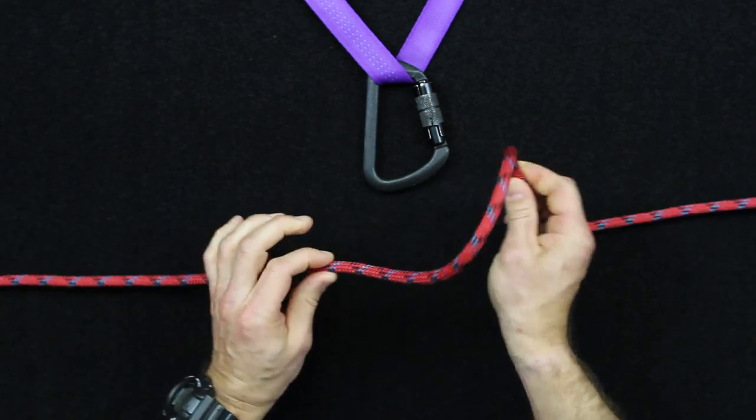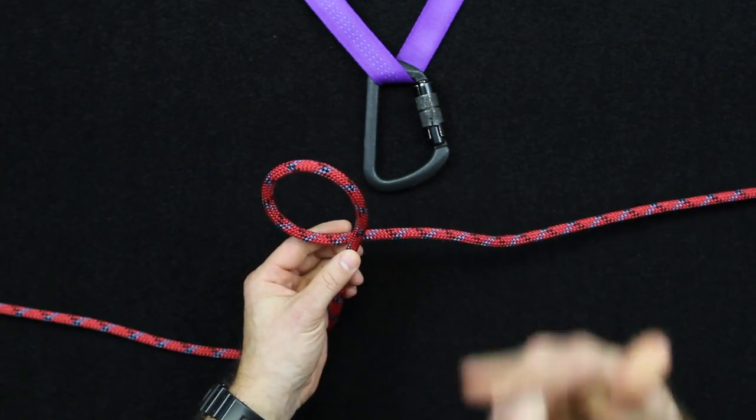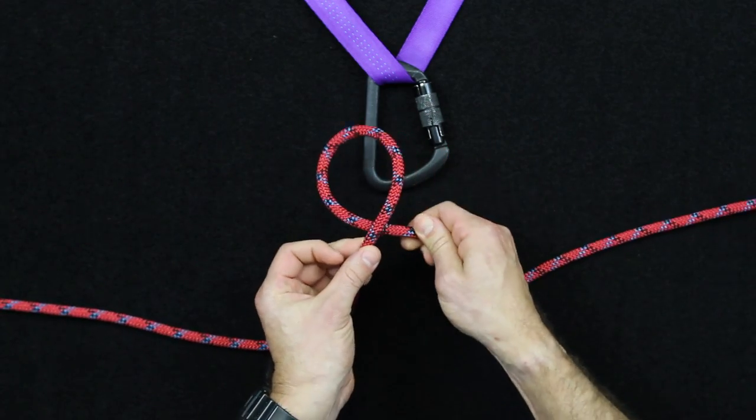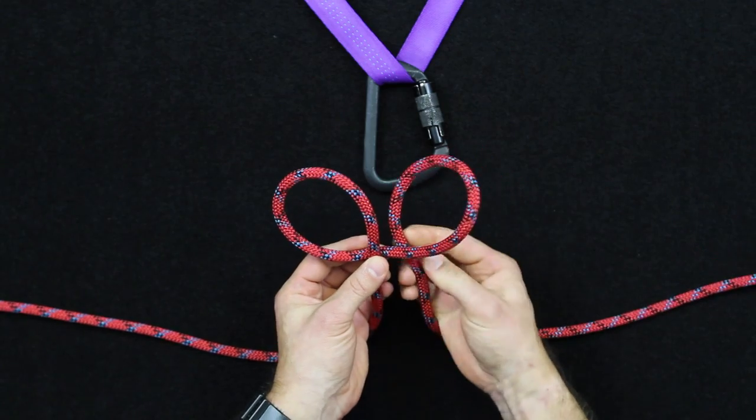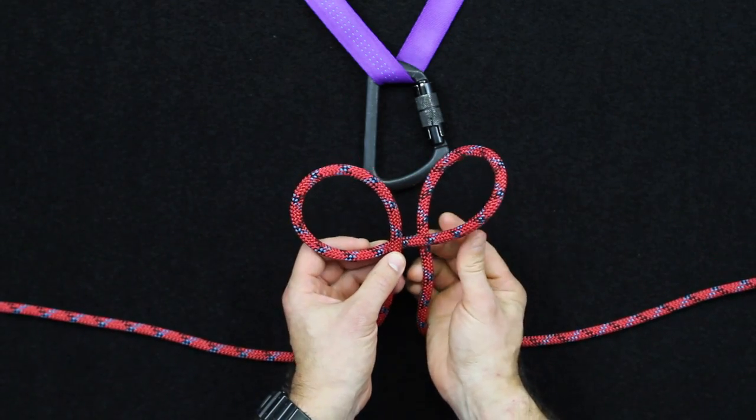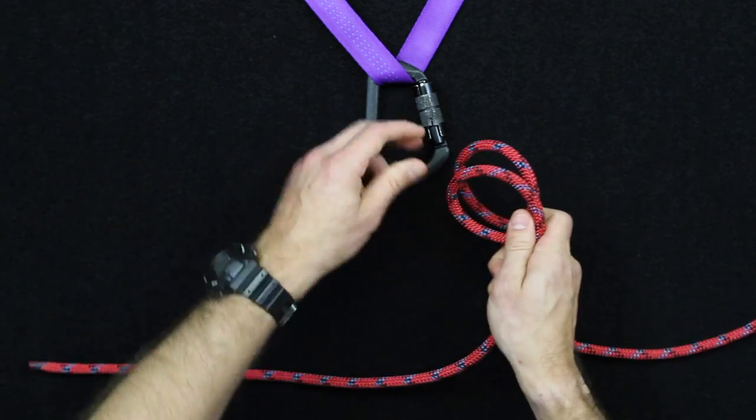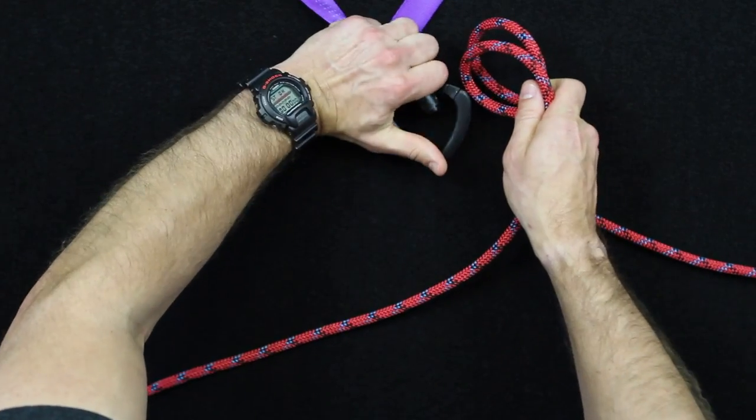So I call this an underhand loop. It just kind of makes my brain think about the way that I twist this. So you're going to twist an underhand loop, and in that same direction again twist a second loop, and then you just combine them and that's what you put onto your carabiner.